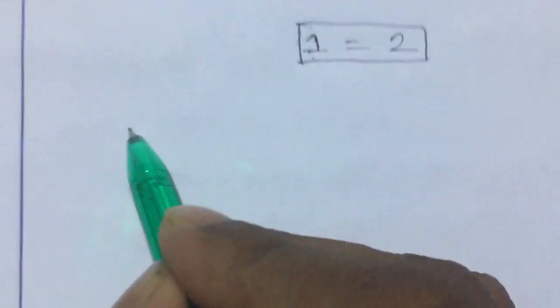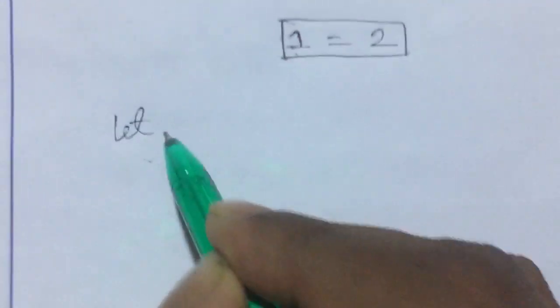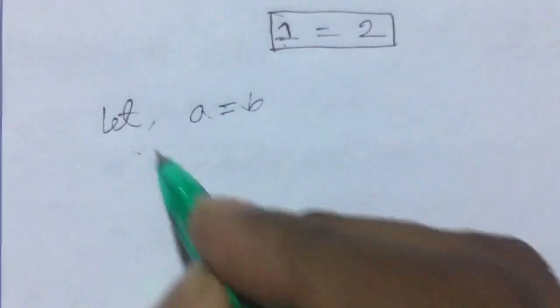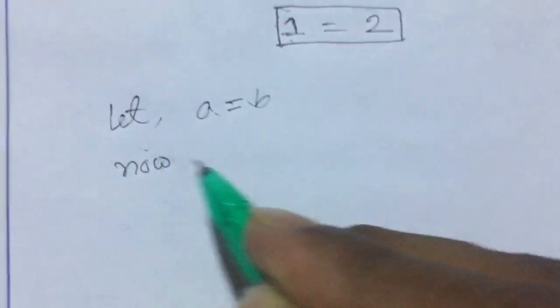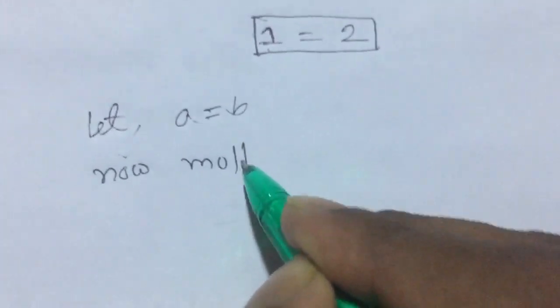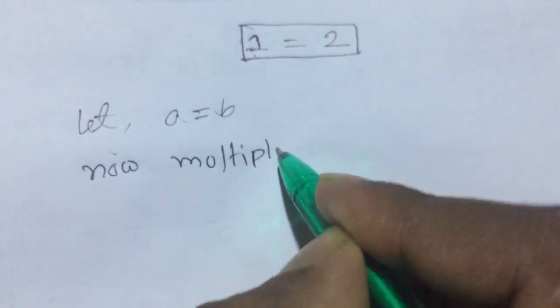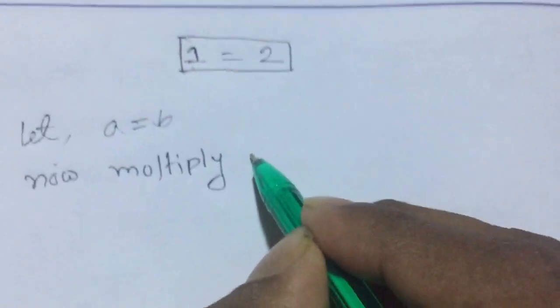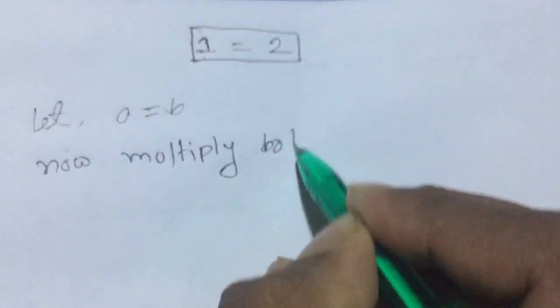Let a equal to b. Now multiply both sides by a.